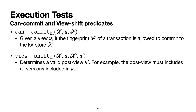In the atomic transaction rule, we mentioned two predicates: can-commit and view-shift. Both are parameterized by an execution test ET. We use these two predicates to specify many well-known consistency models—for example, causal consistency, snapshot isolation, and parallel snapshot isolation. Can-commit determines whether, given a view u, a fingerprint f of a transaction is allowed to commit to the key-value store k.